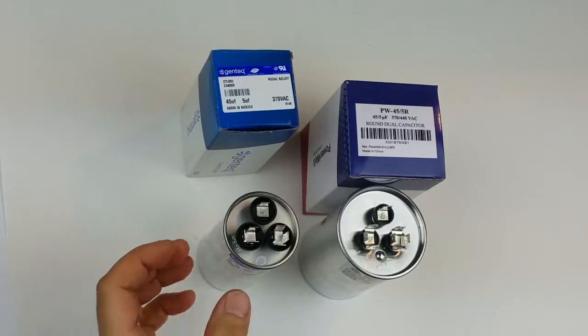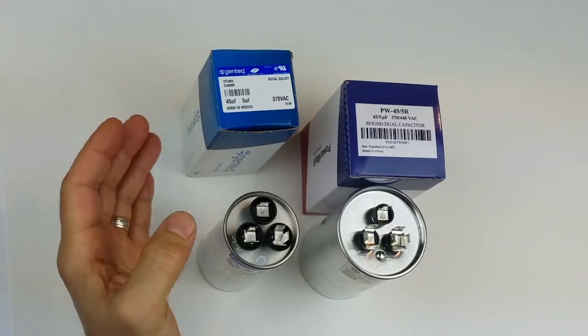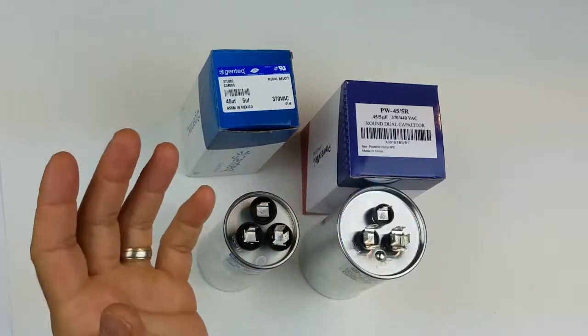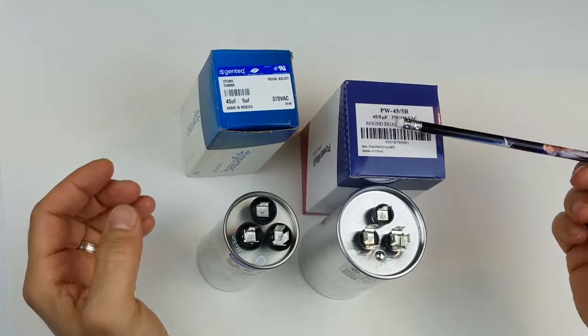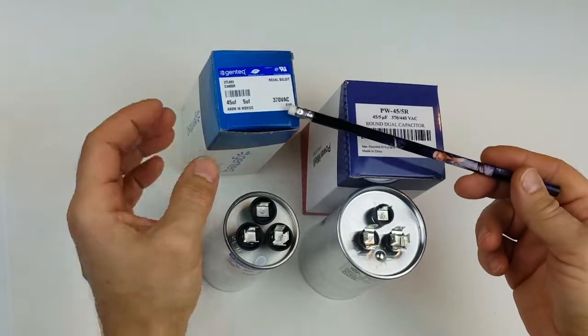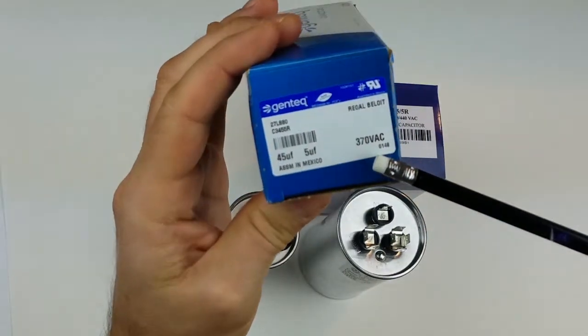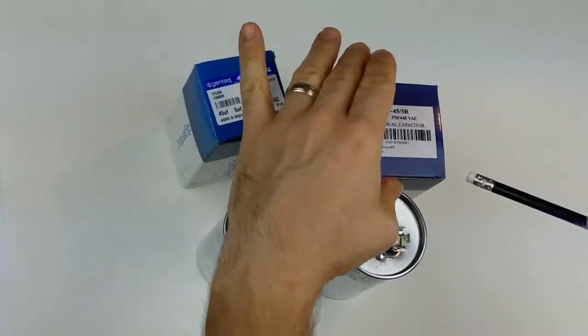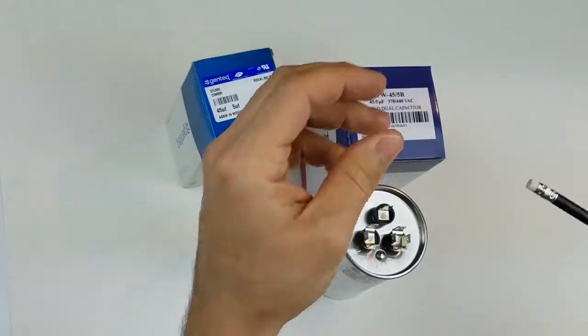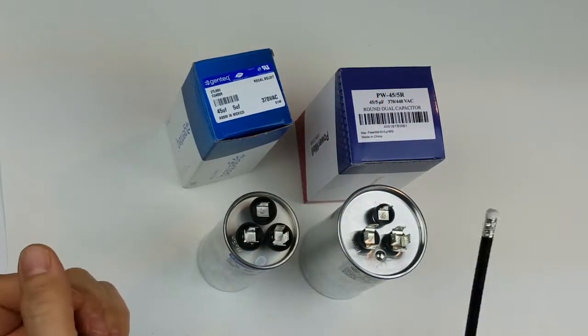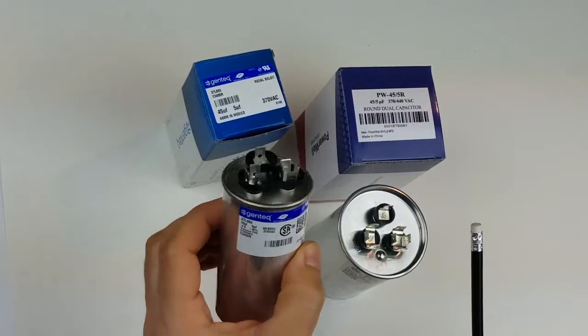What's the difference between the Gentech and Power Well capacitors? Both of them are 45 plus 5, but one is 370 volts and the other one is 370/440 and can be substituted.